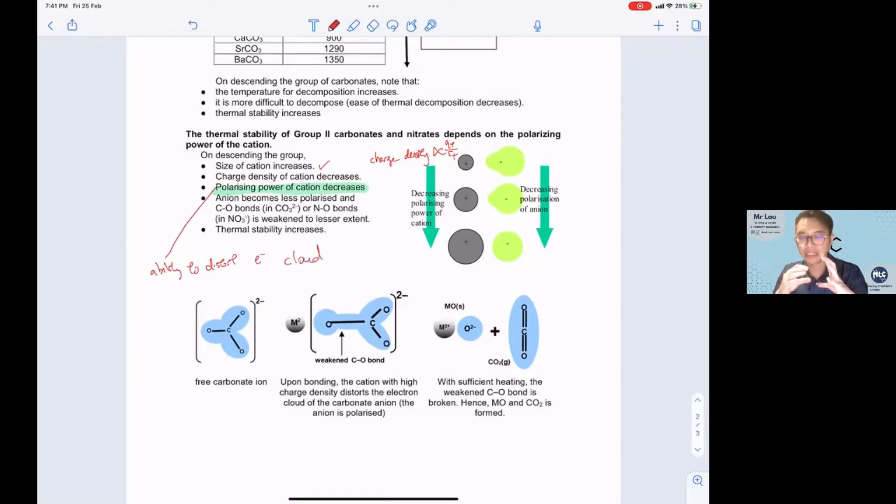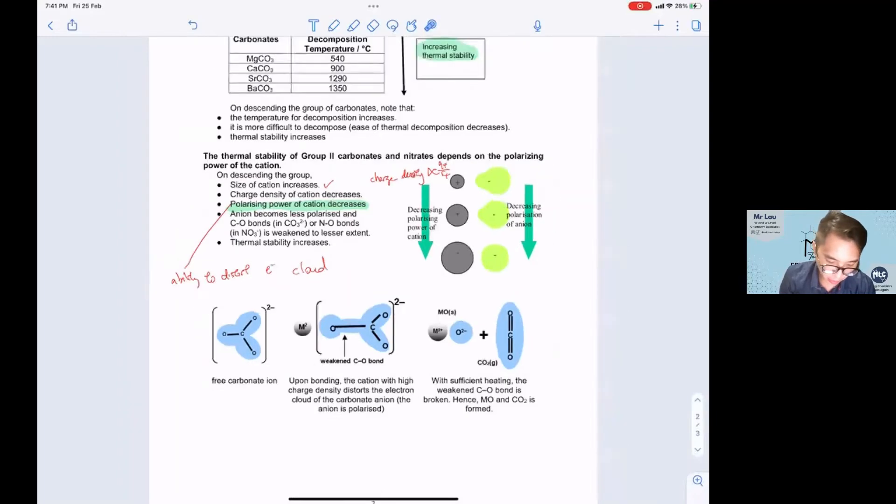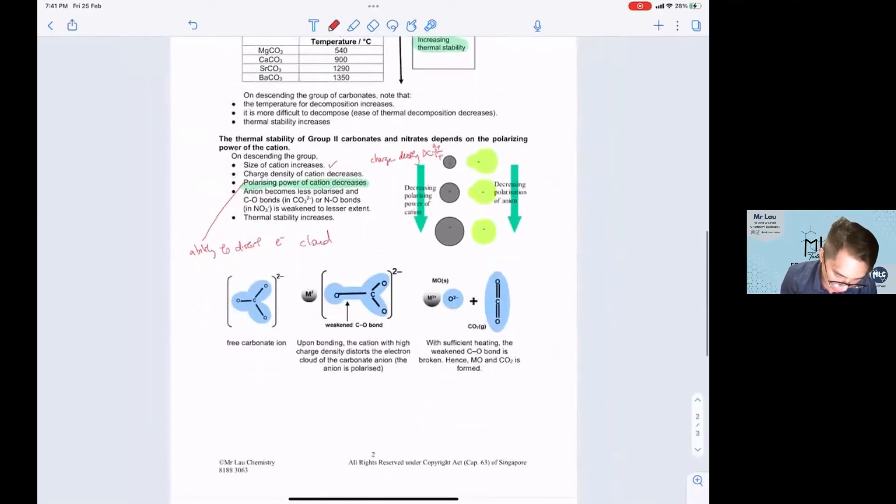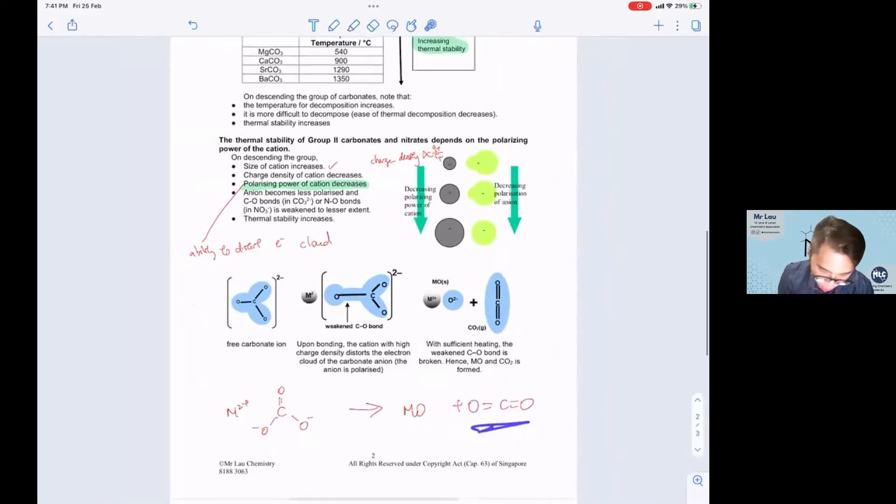Your cation here will distort the electron cloud of your carbonate ion. If you look at MgCO3: M2+ and CO32- becomes MO + CO2. If you look at what is happening from here to here, the reason why CO2 is formed is because this bond here is being broken.